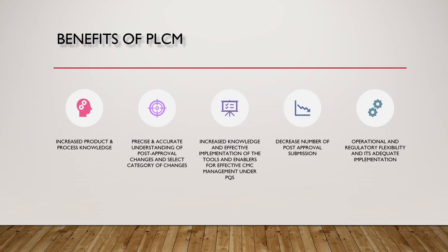The pharmaceutical quality system can incentivize continual improvement by providing an opportunity for greater flexibility in making post-approval changes. Operational and regulatory flexibility and its adequate implementation is subject to the regulatory framework in place, as well as product and process understanding described in ICH Q8 and Q11, and application of quality risk management principles per ICH Q9 and effective pharmaceutical quality system per ICH Q10.